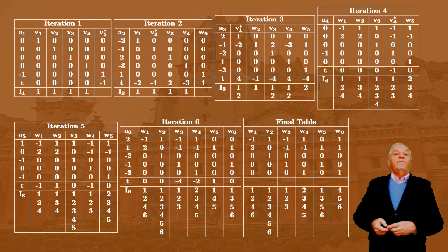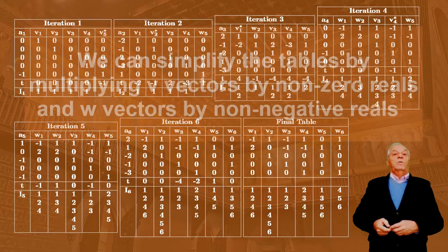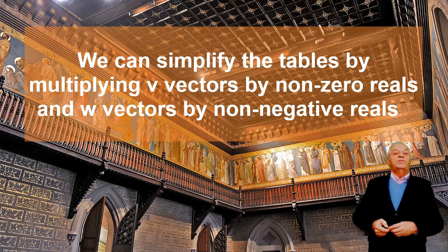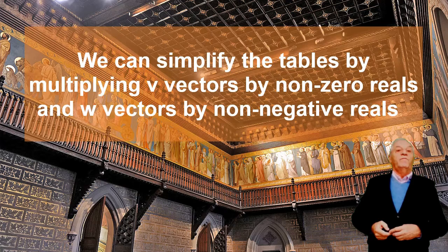In each table we have a dual cone. If there are V column vectors, they are the basis of the vector space part of the dual cone. If there are W vectors, they are the edges of the acute part of the corresponding dual cone. After obtaining each table, to simplify, we can multiply any V column by any non-zero real number, and each W column by any non-negative real number, because these operations lead to valid bases of the vector spaces and edges of the acute cones. This simplification has been incorporated in the computer program, so after each iteration a simplification of this type is done if possible.